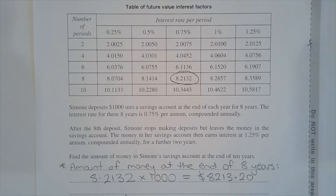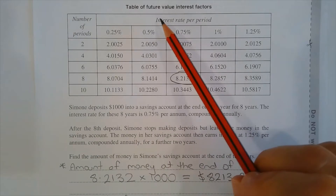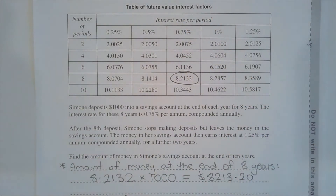The solution is split into two parts. In the first part, we'll determine the amount of money in the account at the end of 8 years using the table of future value interest factors. The result of which is fed into the second part of the solution, which uses the future value formula to find the value in the account at the end of 10 years.